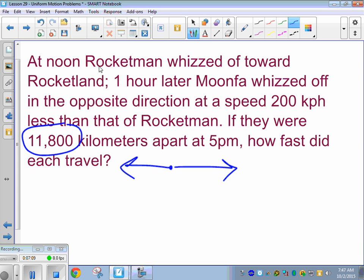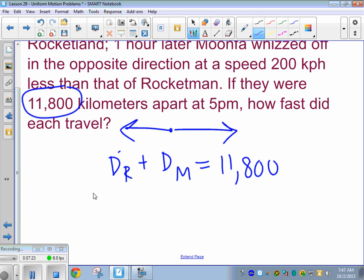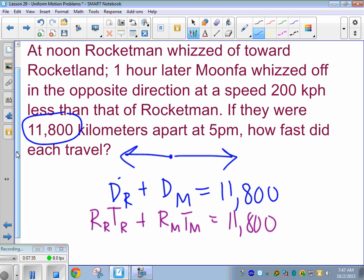So we have Rocketman and Moonpha. So distance Rocketman. I did not write this problem. So distance Moonpha is 11,800. I mean, occasionally, Saxon gets a little creative. Just a little bit. All right. Rate Rocketman, time Rocketman, plus rate Moonpha, time Moonpha.